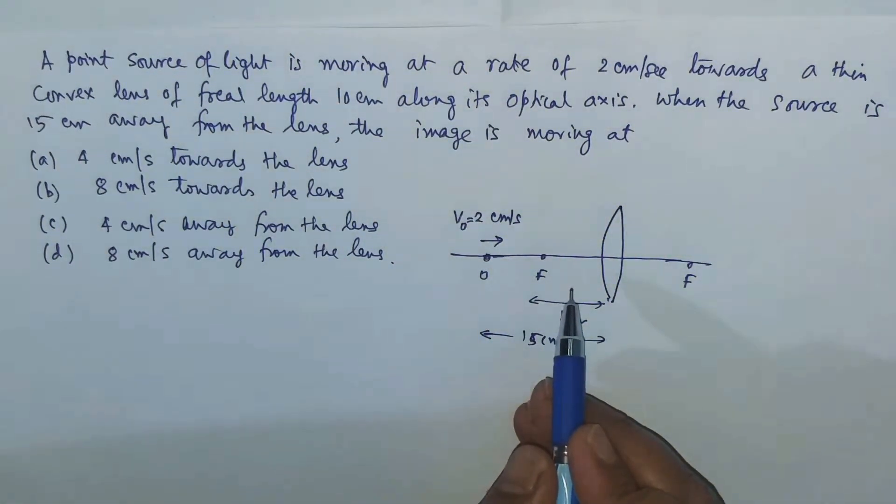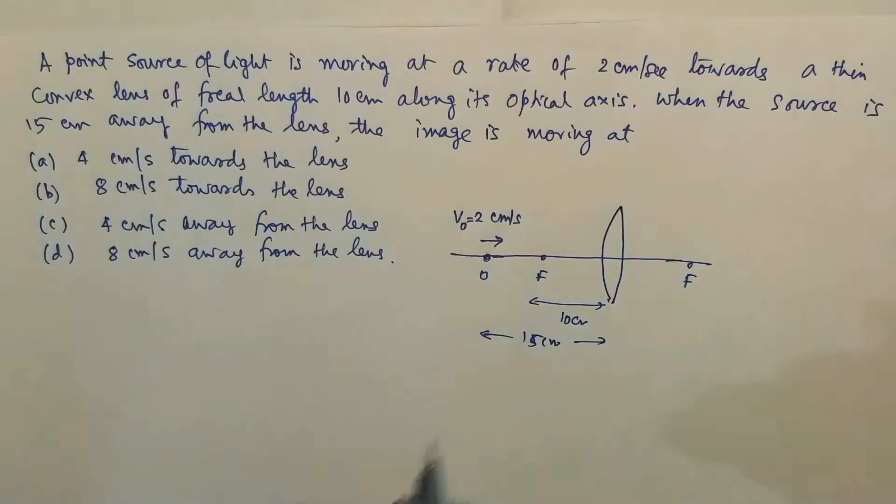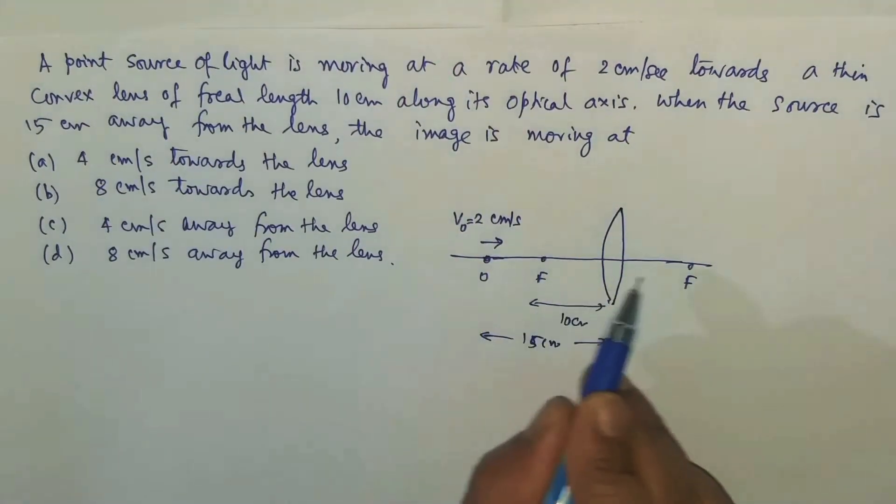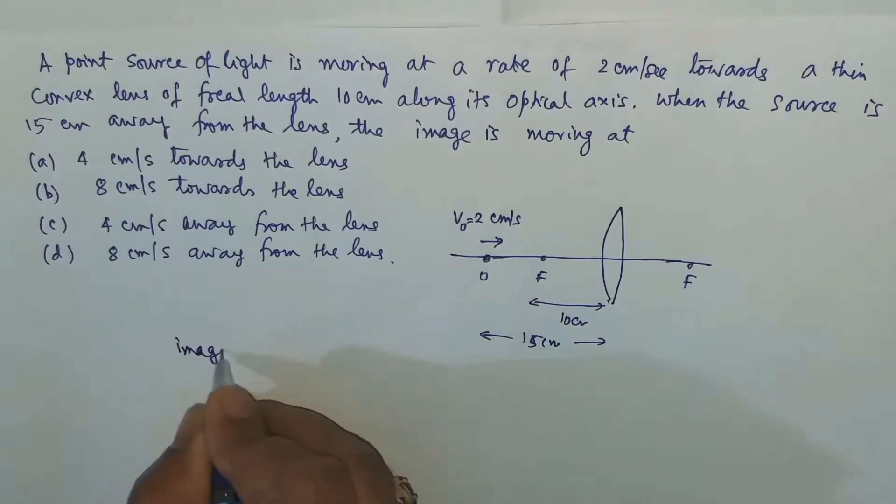In which direction will it be moving? Away from the lens. So first, by initially looking at the condition of the question, we can say that the image will be moving away from the lens.